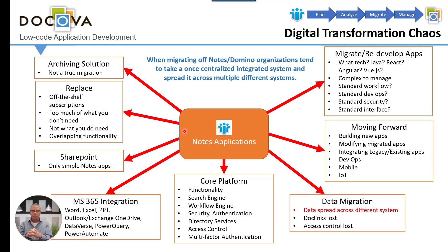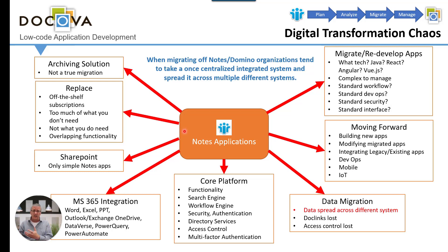What's happening when you're trying to get off Notes and Domino is what you see on the screen. Going to the top left — archiving solutions. Not a true migration, but some of your applications you might archive into an archiving solution. Some applications you might replace, so now you're potentially buying multiple subscriptions. The points about off-the-shelf applications are: too much of what you don't need, not enough of what you do need, and overlapping functionality.